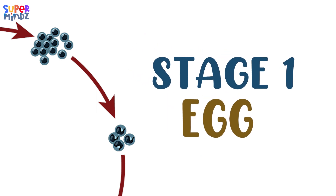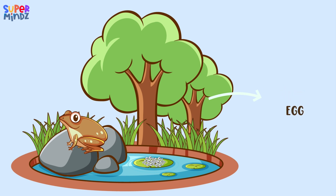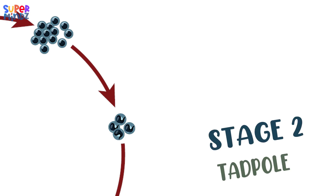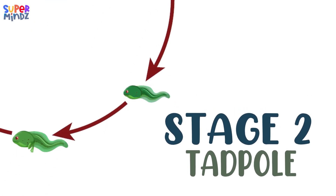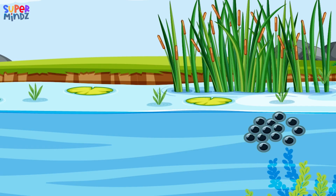Stage one: Egg. Frog eggs are laid in water, usually in clusters. They are covered in a jelly-like substance to keep them protected. Stage two: Tadpole. As the eggs hatch, they release tadpoles.